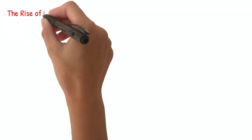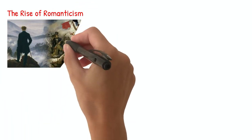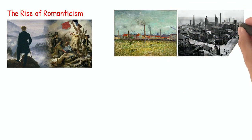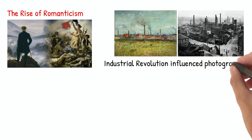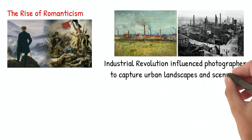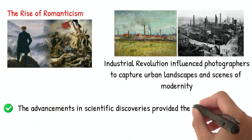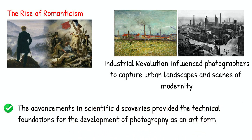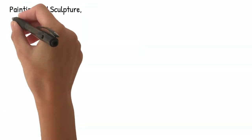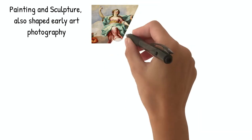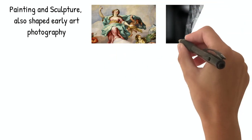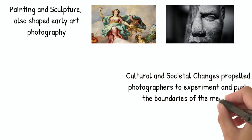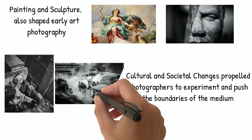The rise of Romanticism and the desire to capture the sublime and transcendental aspects of nature played a significant role in the rise of photography. Additionally, the growing interest in documenting the world during the Industrial Revolution influenced photographers to capture urban landscapes and scenes of modernity. The advancements in scientific discoveries provided the technical foundations for the development of photography as an art form. The influence of other visual arts, such as painting and sculpture, also shaped early art photography, with photographers aiming to achieve similar aesthetics and compositions in their images. Furthermore, cultural and societal changes propelled photographers to experiment and push the boundaries of the medium.